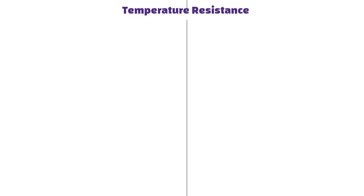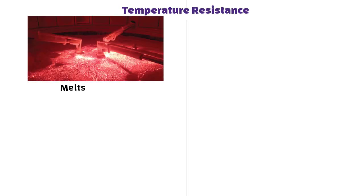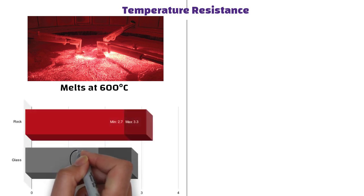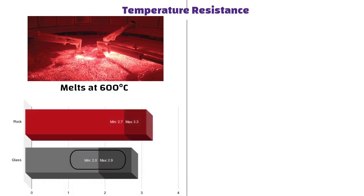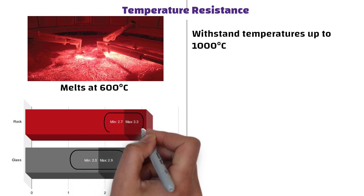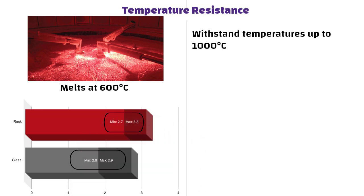Temperature Resistance: Glass wool melts at around 600 degrees Celsius and has an R-value of 2 to 2.9 per inch. Whereas rock wool can withstand temperatures up to 1000 degrees Celsius and boasts an R-value of 2.7 to 3.3 per inch, making it slightly better at insulation than fiberglass.